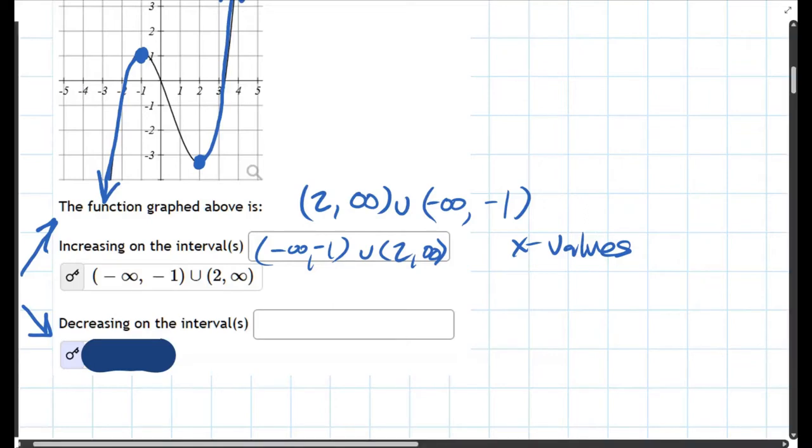Decreasing down to the right is happening in one place, right in the middle here. We're going to describe these using x-values, so the smallest x-value is negative 1, the biggest one is positive 2. So we're going negative 1 to 2, and again we do not include the endpoints because at the endpoints you're at a hilltop and depending on which way you look, you're increasing or decreasing. So we exclude both of those points right there.